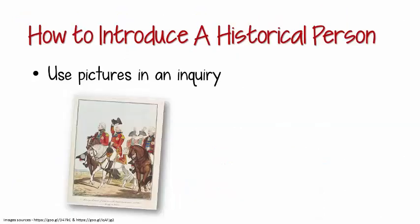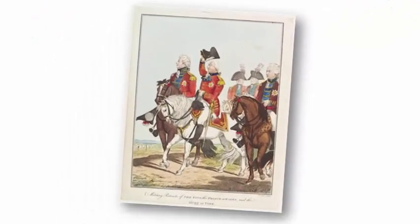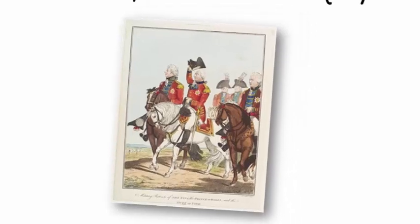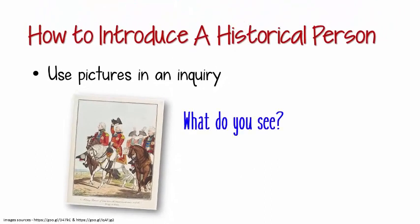One way to introduce students to a person of historical significance is by using an inquiry learning approach. You can do this by sharing a picture of that historical person. The one we've chosen as an example here is King George III riding on a white horse. First, give your students some time to look over the image — you may even want them to use hand lenses to identify finer details. Next, ask them the overarching question: what do you see? Explain that you're not asking them to interpret anything right now, just what they observe.